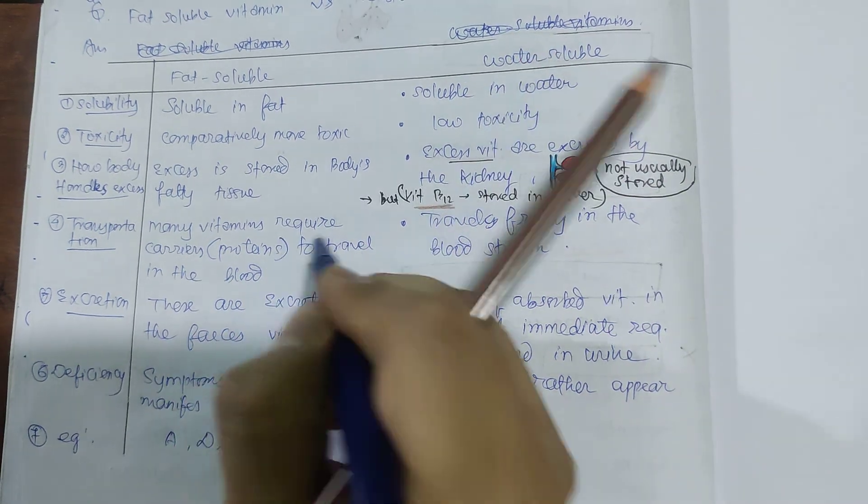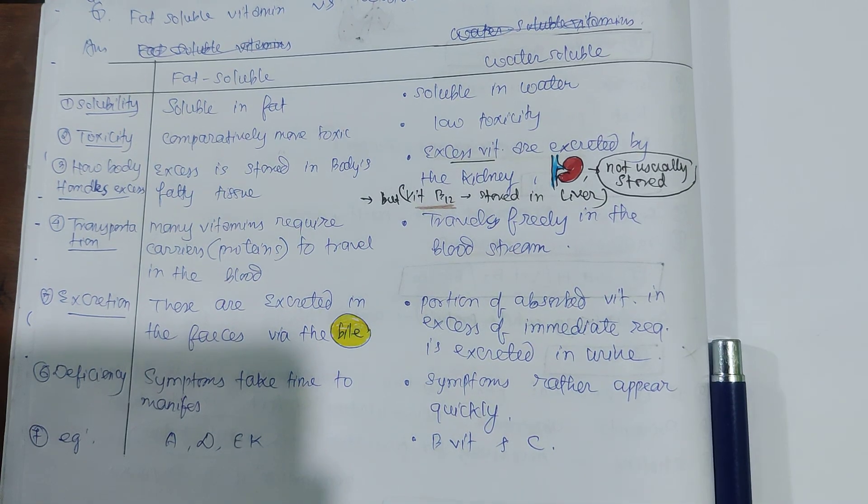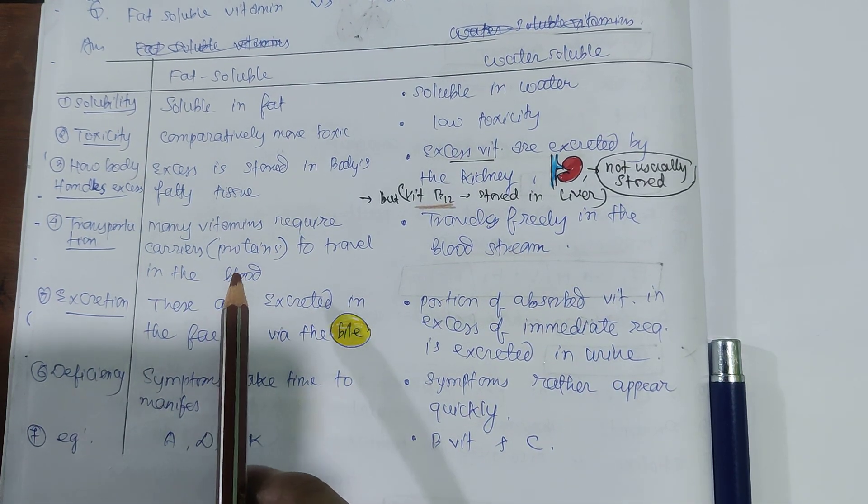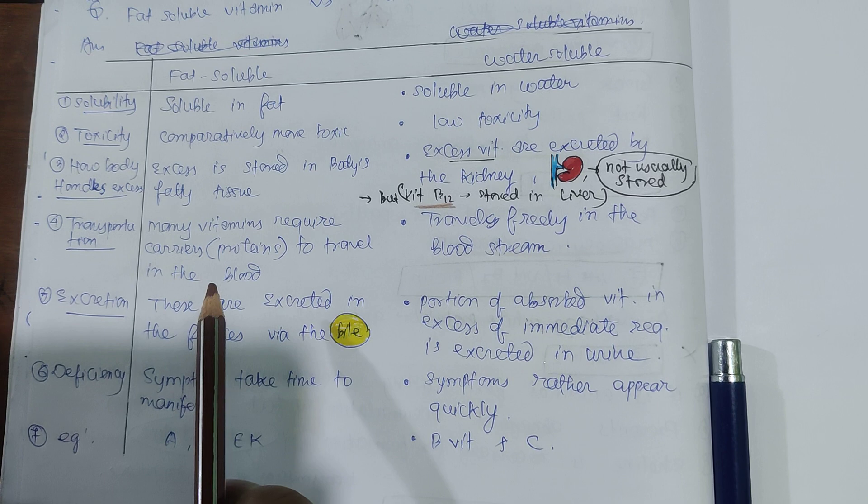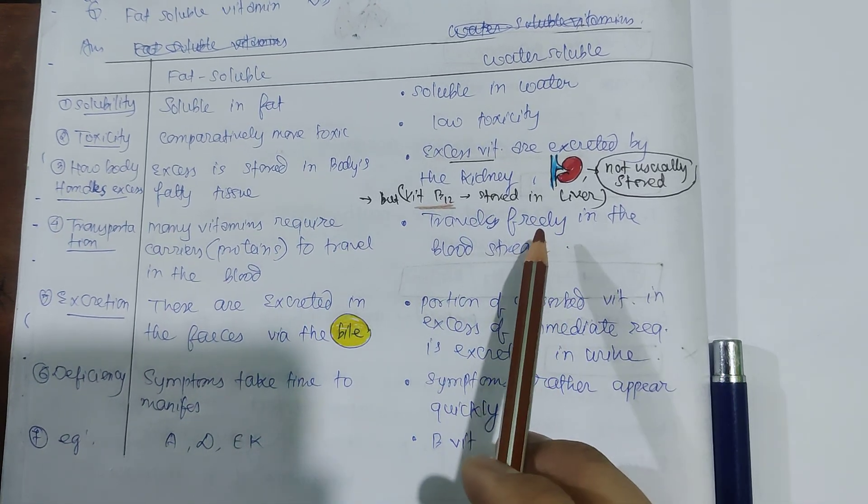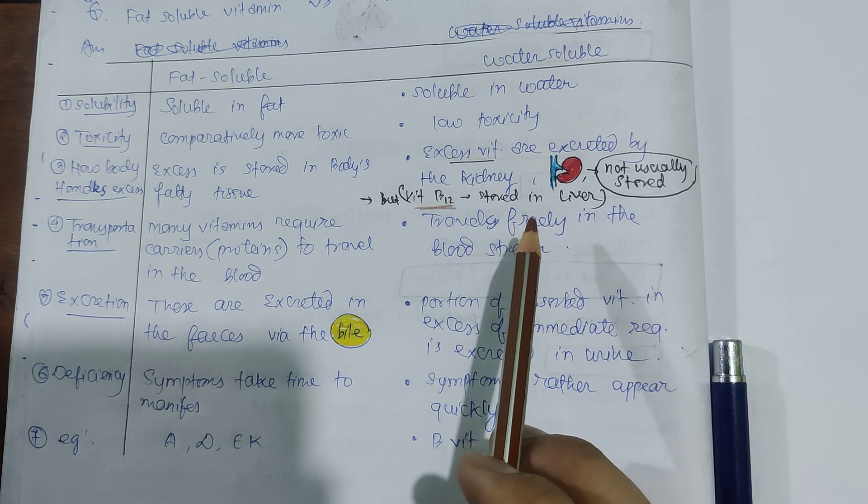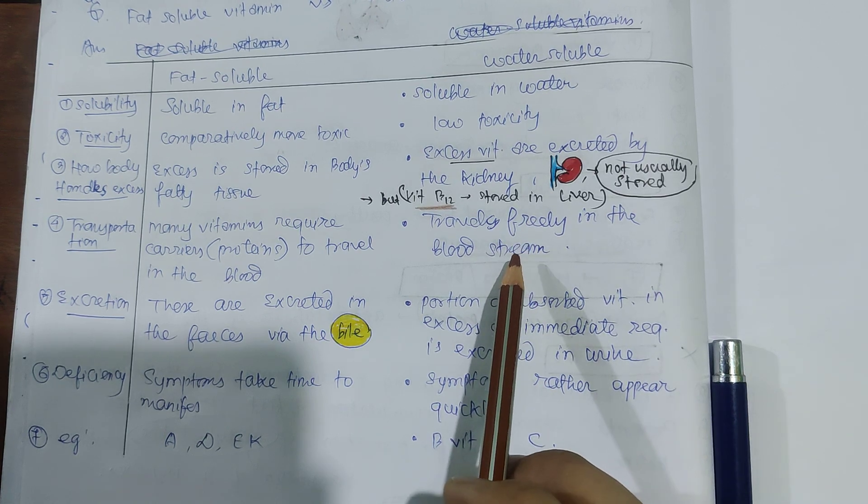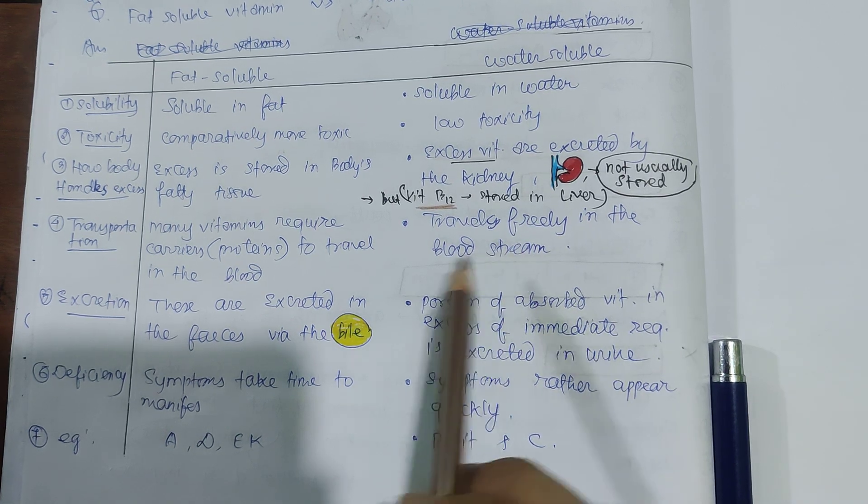Obviously proteins - to travel in the blood, fat-soluble vitamins need carriers which are proteins. But water-soluble vitamins, being soluble in the blood, travel freely in the bloodstream.